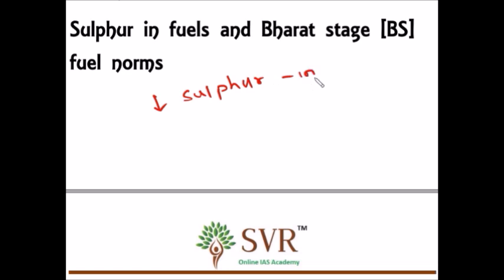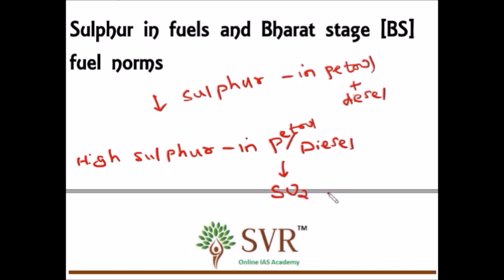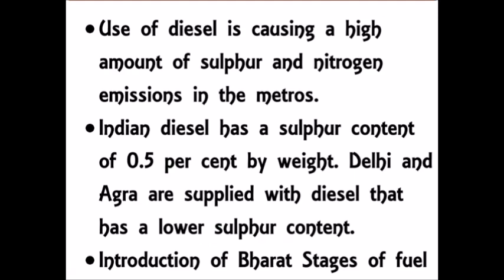If diesel or petrol with high sulfur content is used, more sulfur is released into the atmosphere, causing more sulfuric acid formation, more acidic rain, and other harmful effects. The objective is to reduce the amount of sulfur present in petrol and diesel. Delhi and Agra are already supplied with diesel that has a lower sulfur content.